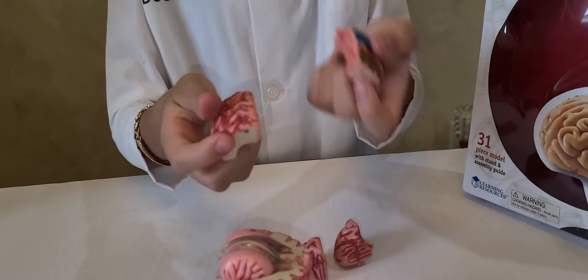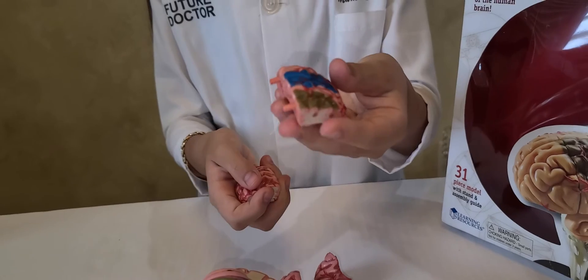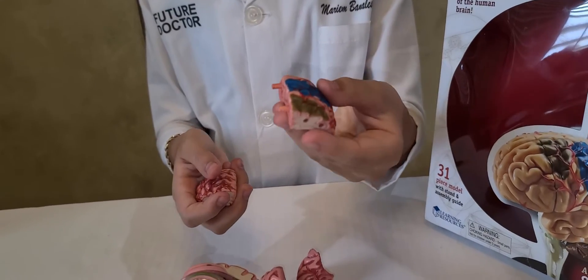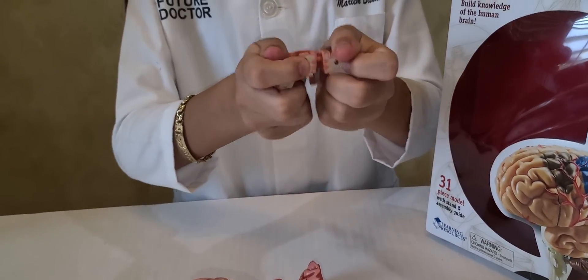And the piece that I will place it with is called the parietal lobe and the parietal lobe interprets sensory information of touch, pressure, temperature and pain involved with language comprehension. So I will put these together.